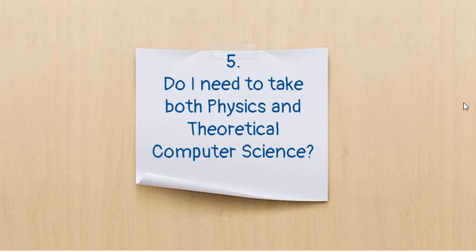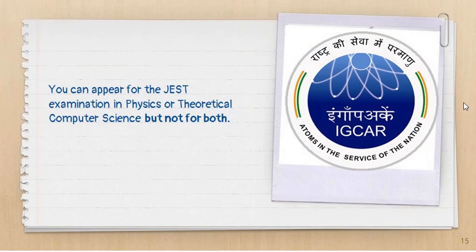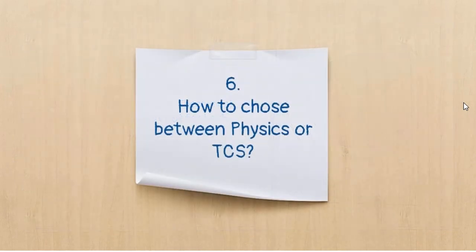If you are confused about whether you need to take both physics and theoretical computer science papers, you should know that you only have to appear for one paper — either physics or theoretical computer science.